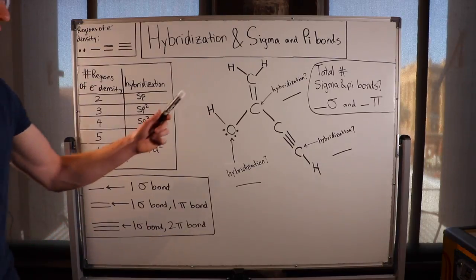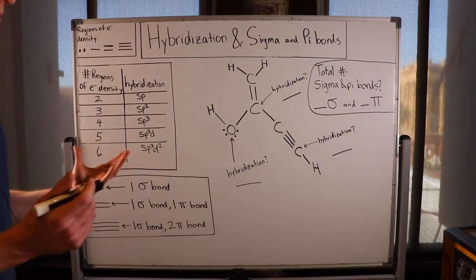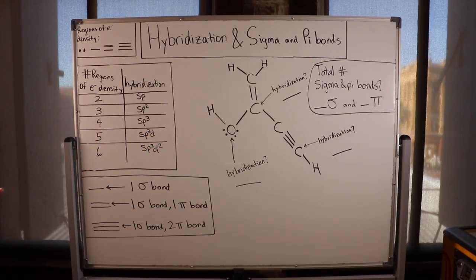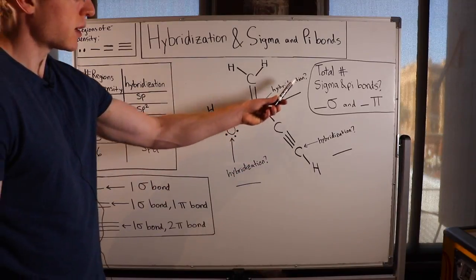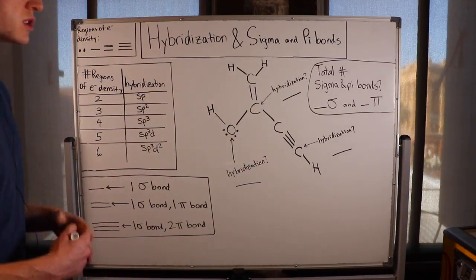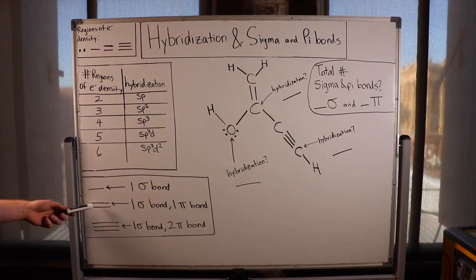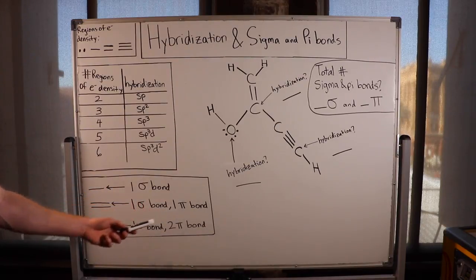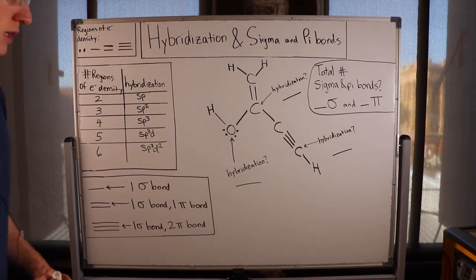Let's go through this example and test out the information we just memorized. We've got a complicated molecular structure — certainly more complicated than most compounds we see in GenChem. I've pointed to several different atoms and I want to know their hybridization. But first, tell me the total number of sigma and pi bonds in this entire molecule. A single bond counts as one sigma bond, a double bond counts as one sigma and one pi bond, and a triple bond counts as one sigma and two pi.